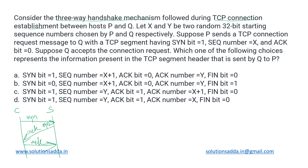In this question, we have two hosts P and Q, and they are randomly selecting a 32-bit sequence number, which is X and Y respectively.